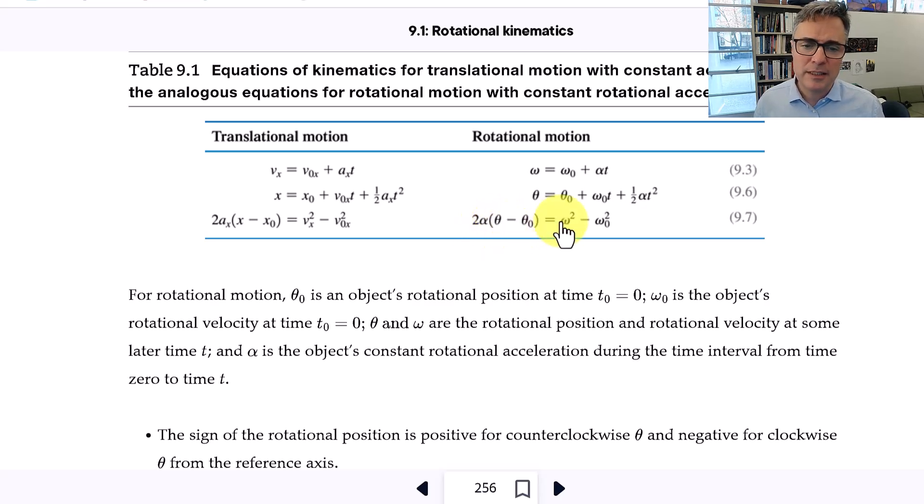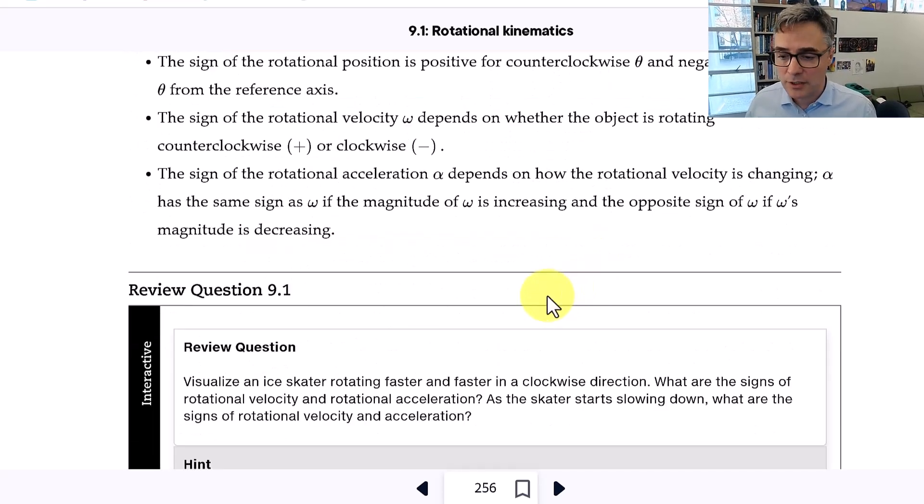And then this equation, 2 times alpha times the change in angular position equals omega final squared minus omega initial squared. So these can be really useful if you know that the angular acceleration of an object is constant. For example, maybe it has a constant torque on it.